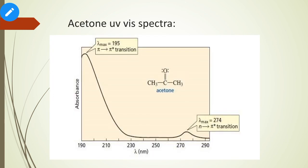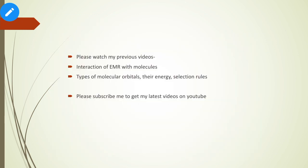These are the key points regarding types of electronic transitions. This topic is particularly useful for BSc chemistry students for their semester exams. If you want more clarity, please watch my previous videos on electromagnetic radiation interaction with molecules, types of molecular orbitals, and selection rules. Please subscribe to my YouTube channel, give a like if you enjoyed the video, and stay safe. Thank you.